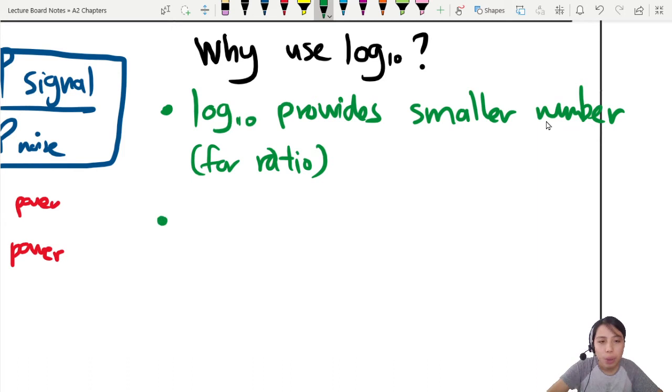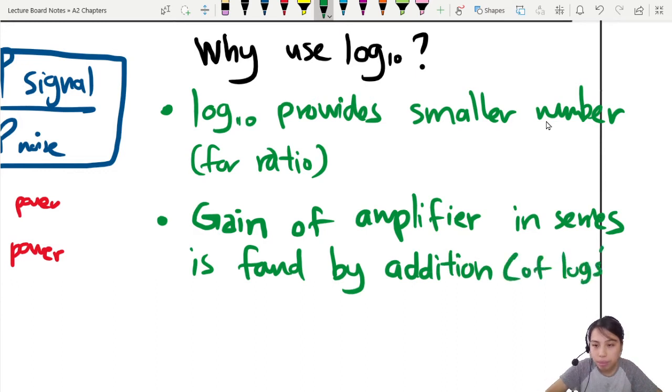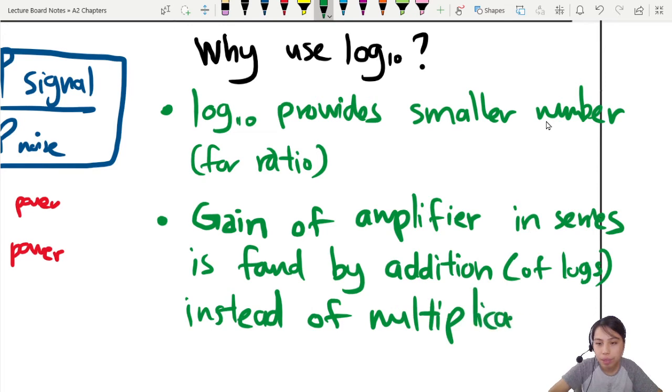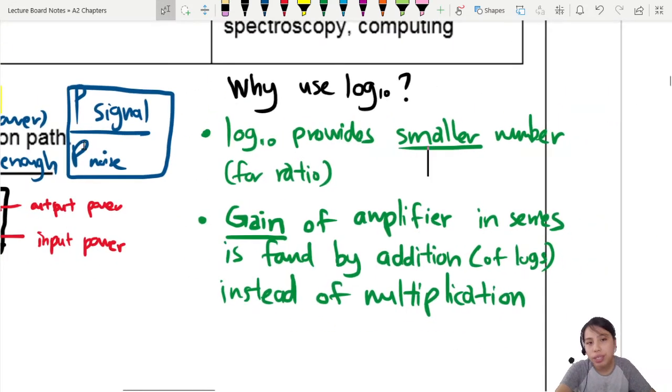And secondly, when we talk about gain of amplifiers, the log 10 actually makes calculations much easier. The second point is, the gain of amplifier in series, means you times 1, times 2, times 3. Basically, in series, is found by addition. So it's easier to do gain calculations here. The reason 2 is gain, and of course, smaller numbers, less amount of zeros.